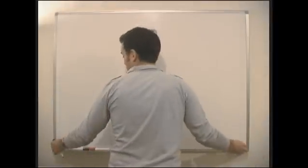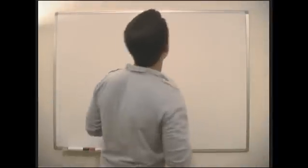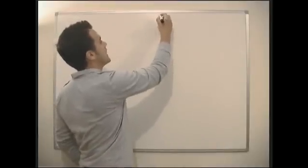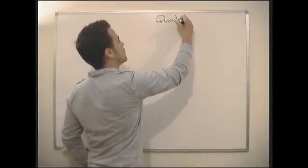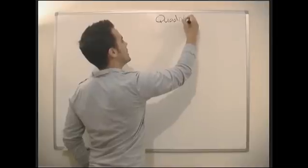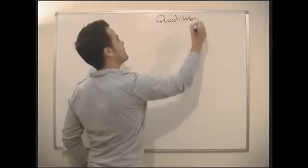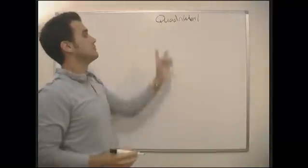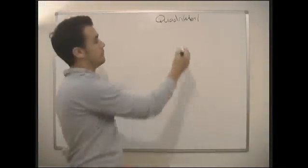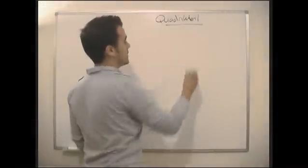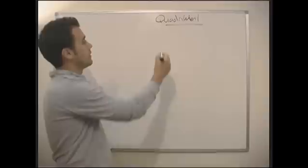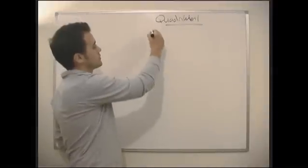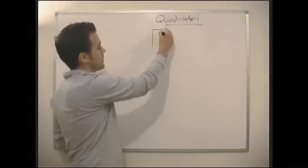What's a shape with four sides called? And don't say a square. A shape with four sides is called a quadrilateral. So, quadrilateral — obviously the most famous quadrilateral, the most obvious one, is a square.